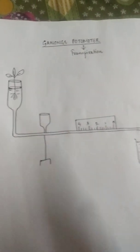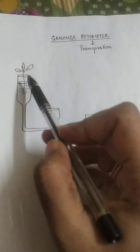That means whether a plant is transpiring very very fast or whether it is a slow transpiring plant. So this instrument is called a potometer and it is designed like this.